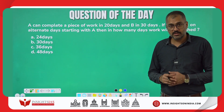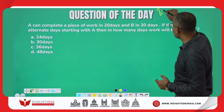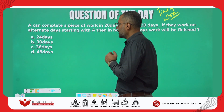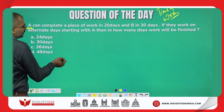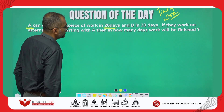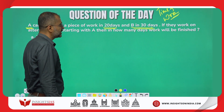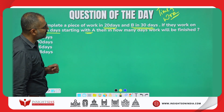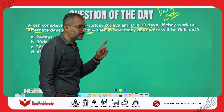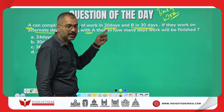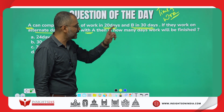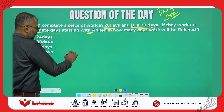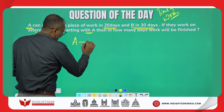Today's question is the Time and Work concept. Person A can complete a piece of work in 20 days; similarly B can complete the same work in 30 days. If they work on alternate days starting with A — first day A, second day B, third day A, and so on — in how many days will the work be finished?